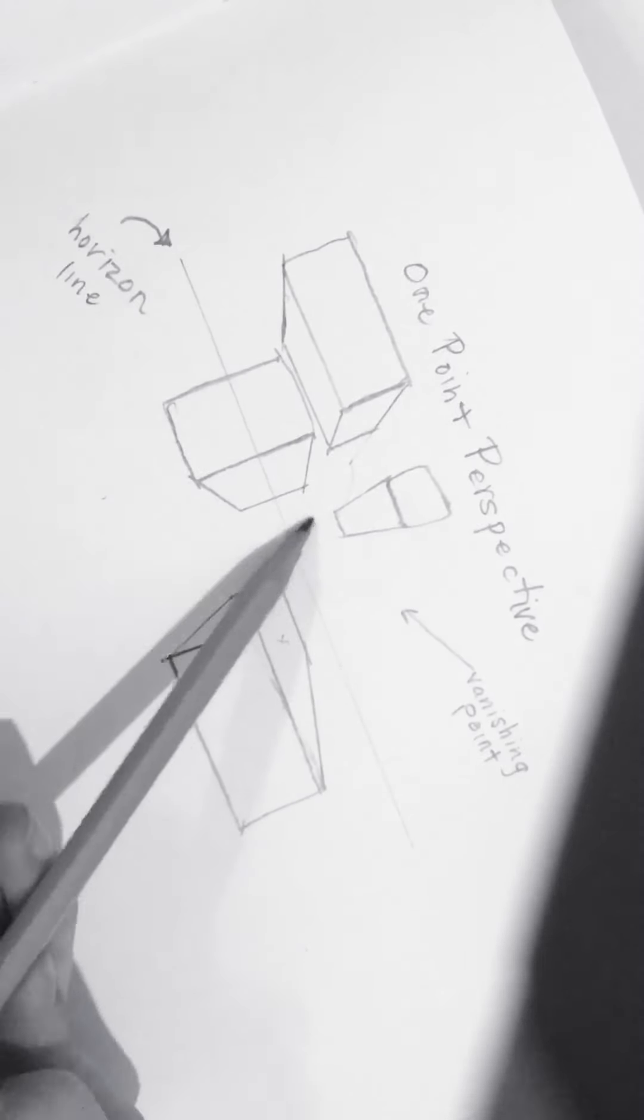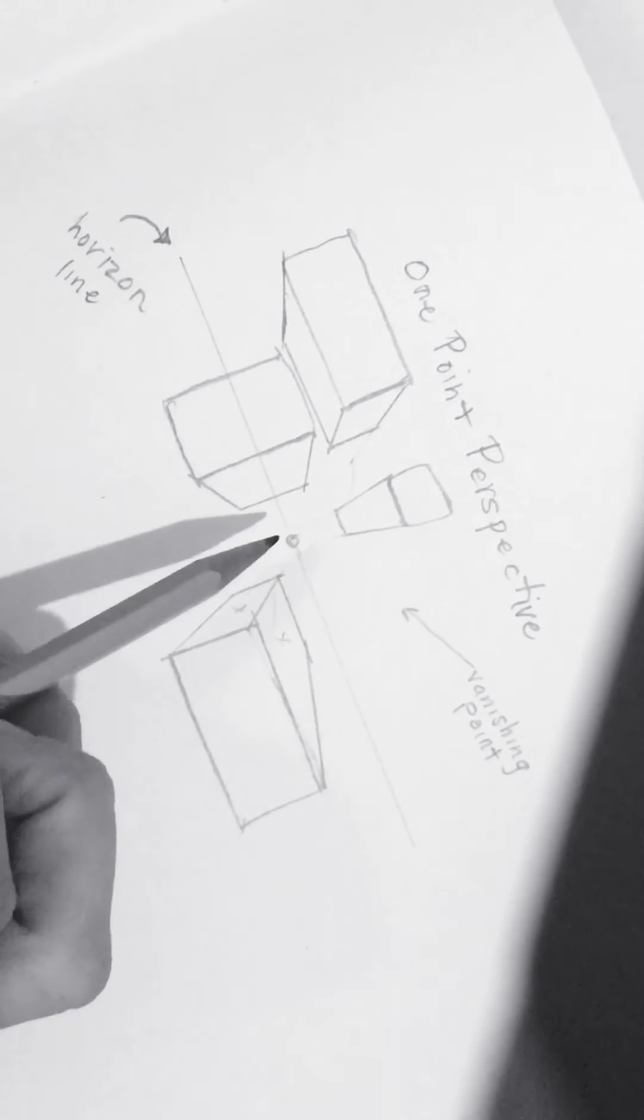Now if you want to get really creative and do a lot of practice, you could actually turn this into a bird's eye view of a city. As if you were looking down over top of all the buildings. And this down here is the ground.